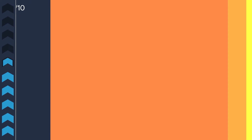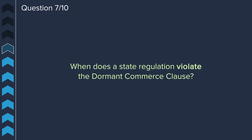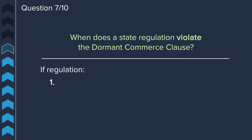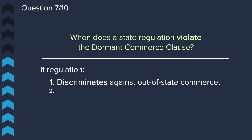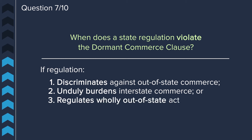Question seven. When does a state regulation violate the Dormant Commerce Clause? The regulation can violate the Dormant Commerce Clause if the regulation discriminates against out-of-state commerce, unduly burdens interstate commerce, or regulates wholly out-of-state activity.